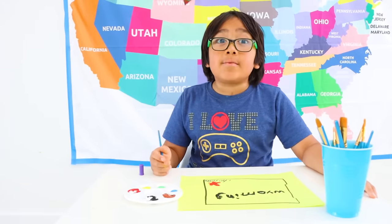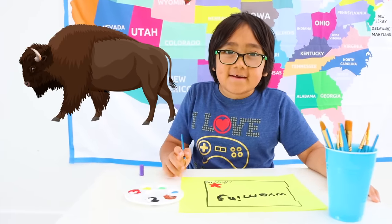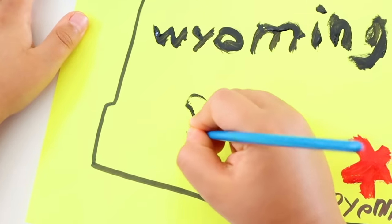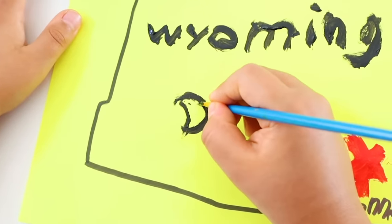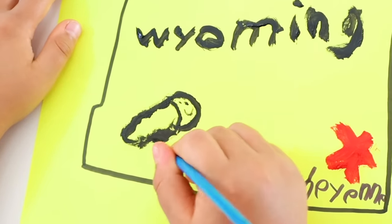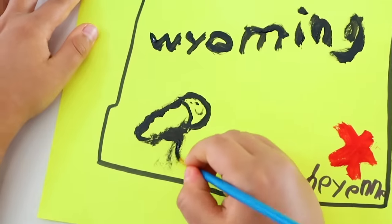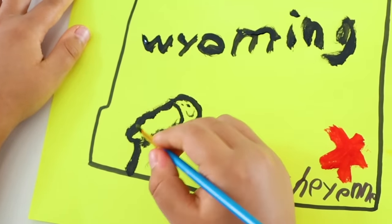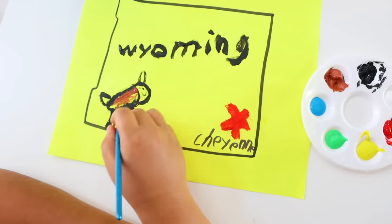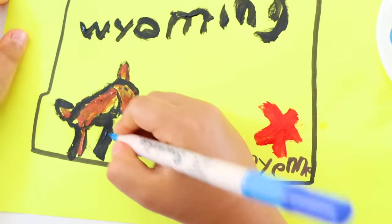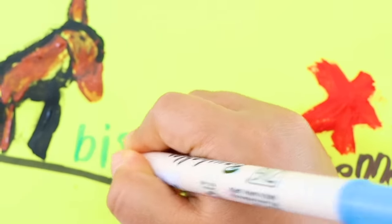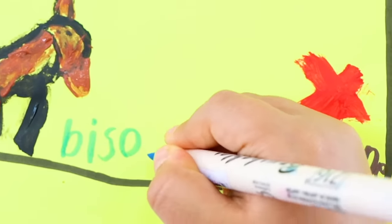Wyoming's state animal is a bison. I'm gonna draw a bison - maybe the head and the body separate, the head goes here with a happy face, the body and some legs, and then the tail. Now I'm gonna color it in with brown. Now I'm gonna name it the bison. B-I-S-O-N.